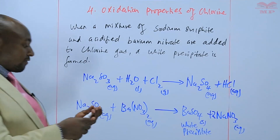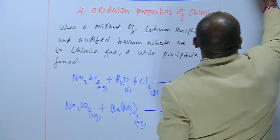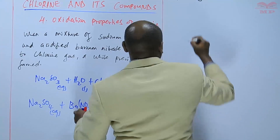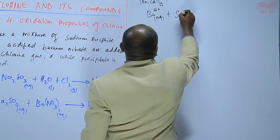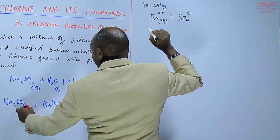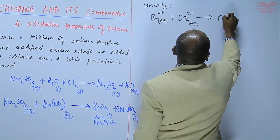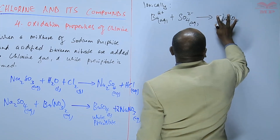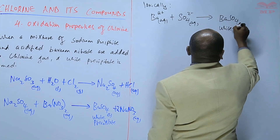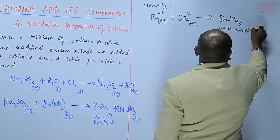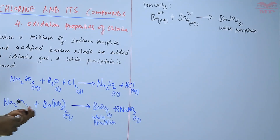We can write this in the form of an ionic equation. Ionically, we are saying that barium ions plus the sulfate ions that have been formed after the oxidation by chlorine combine to form barium sulfate. This barium sulfate is the white precipitate. That is an example showing that chlorine is an oxidizing agent.